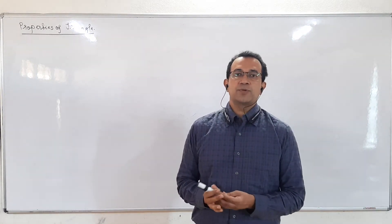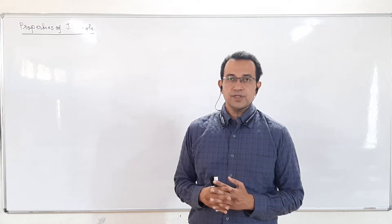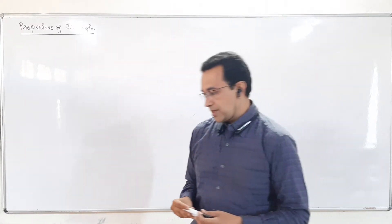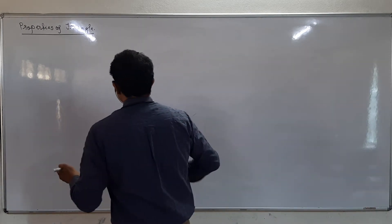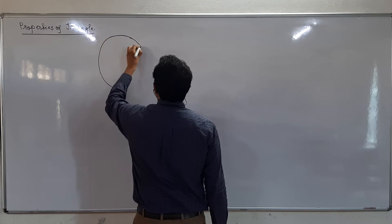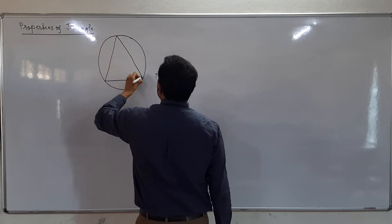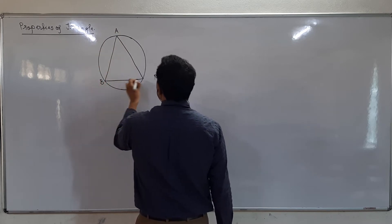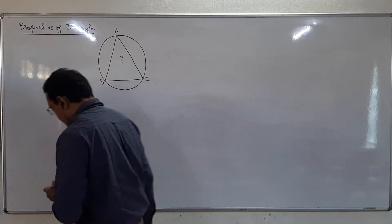Today we are starting with the last topic of our longest chapter of the syllabus, that is Properties of Triangle. This exercise is given in the back in the appendix. This is the circle and the triangle is inscribed in the circle — triangle ABC — the center of the circle is P, which is denoted as the circumcenter.